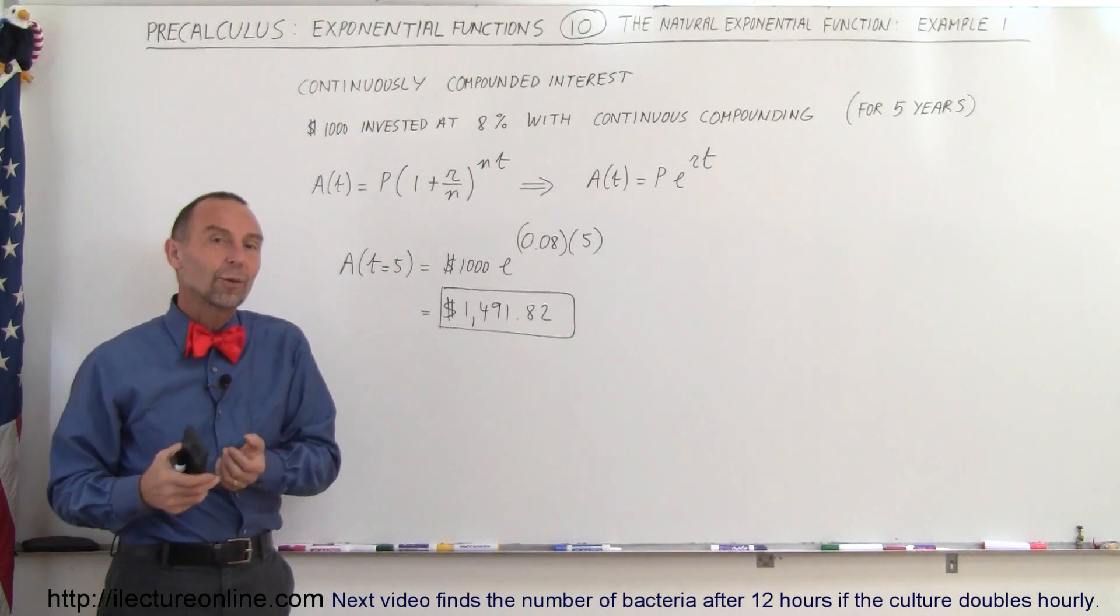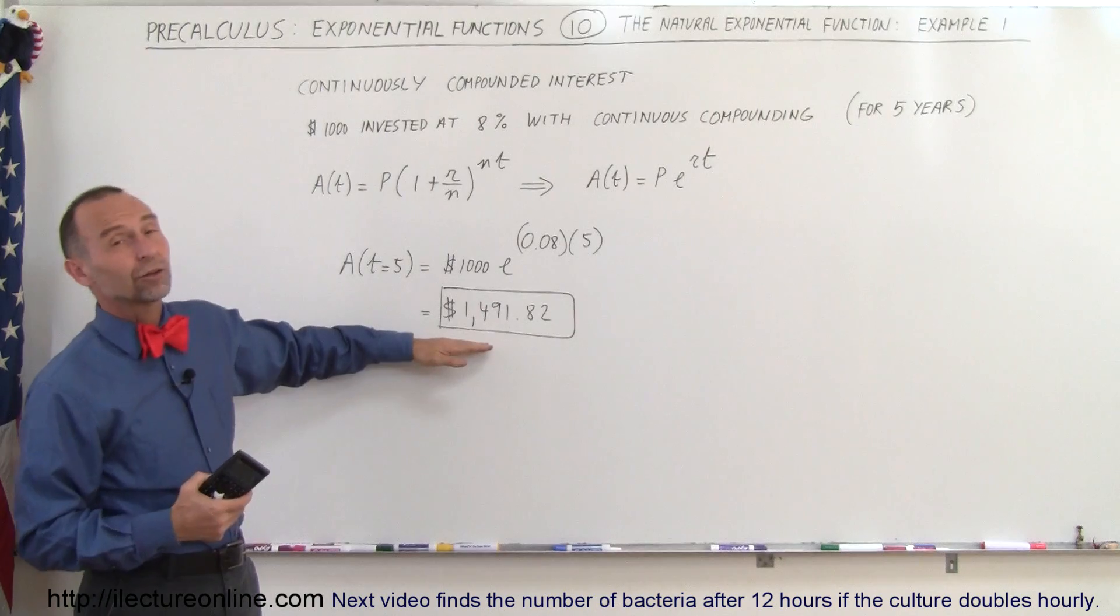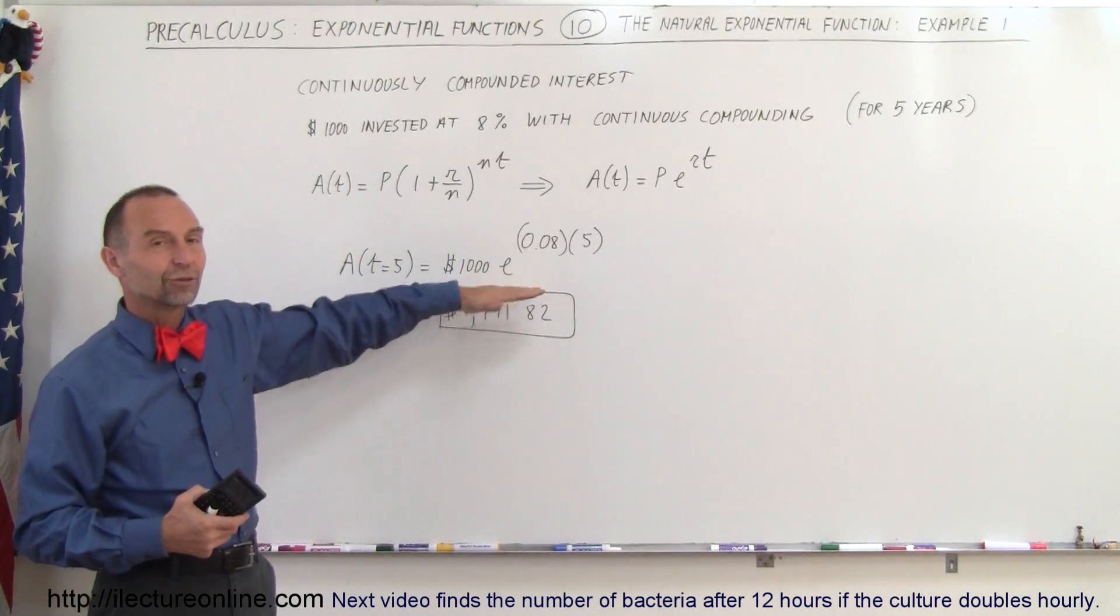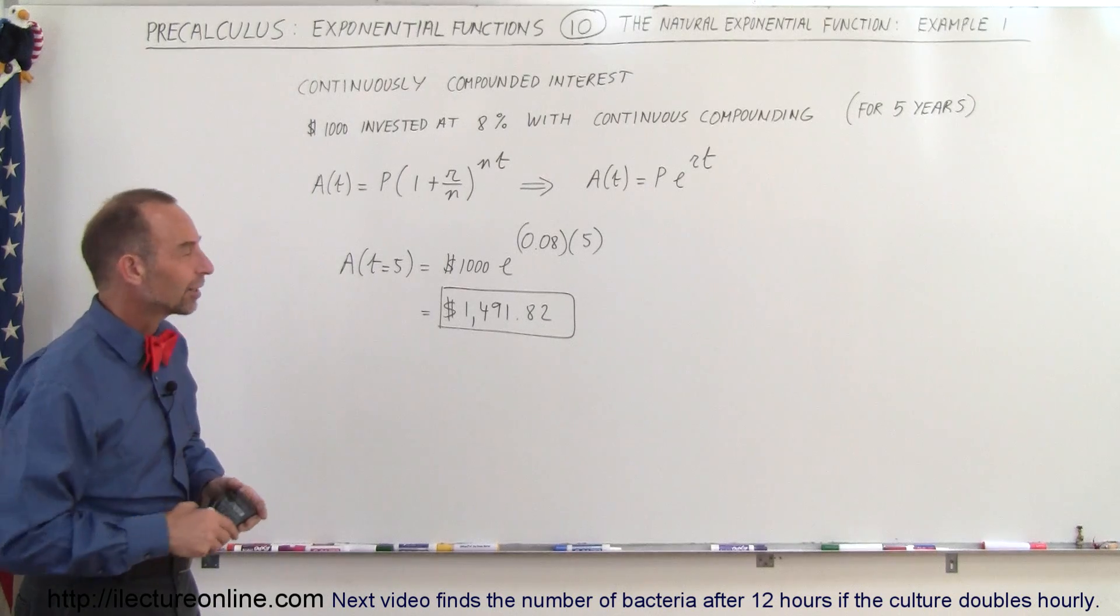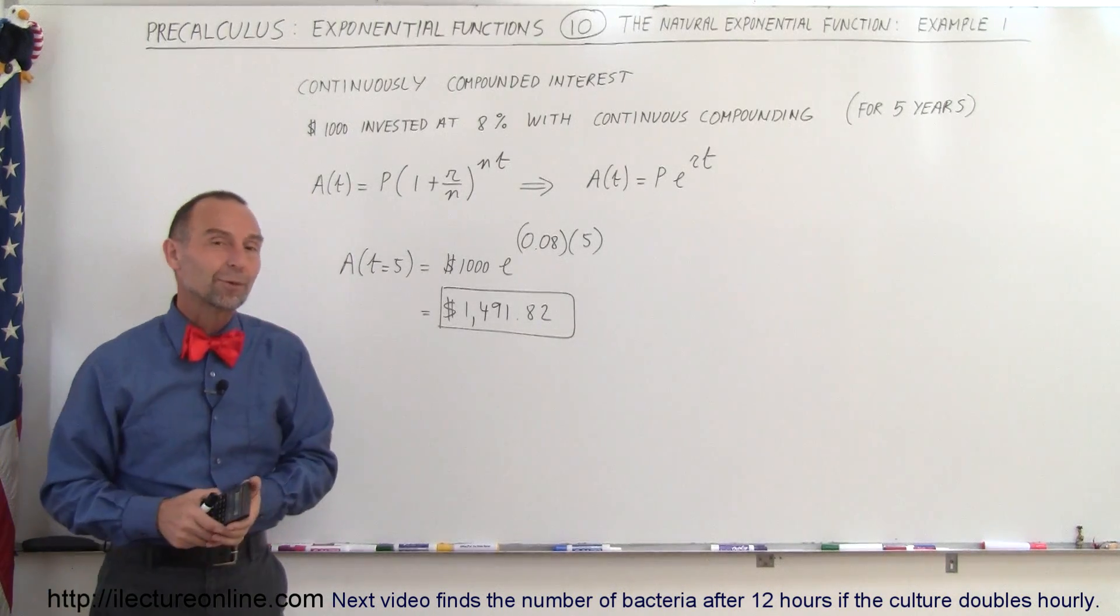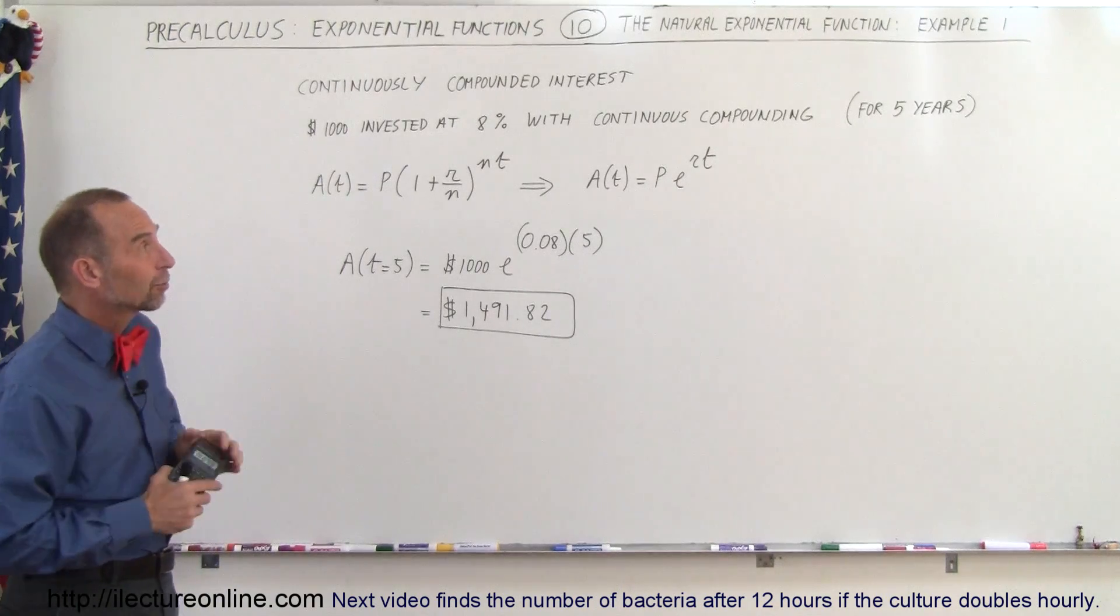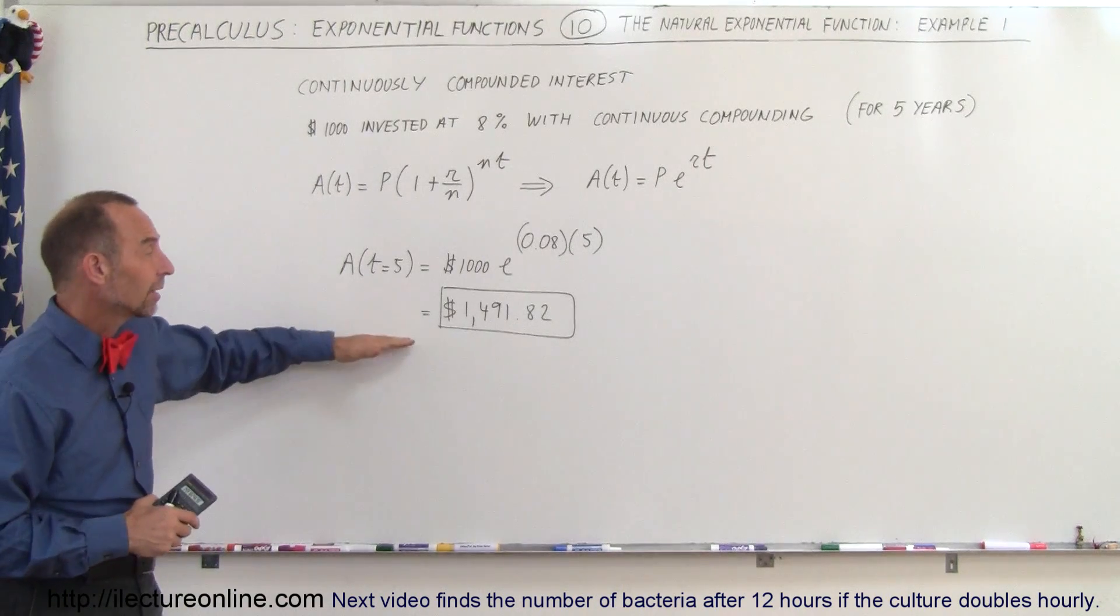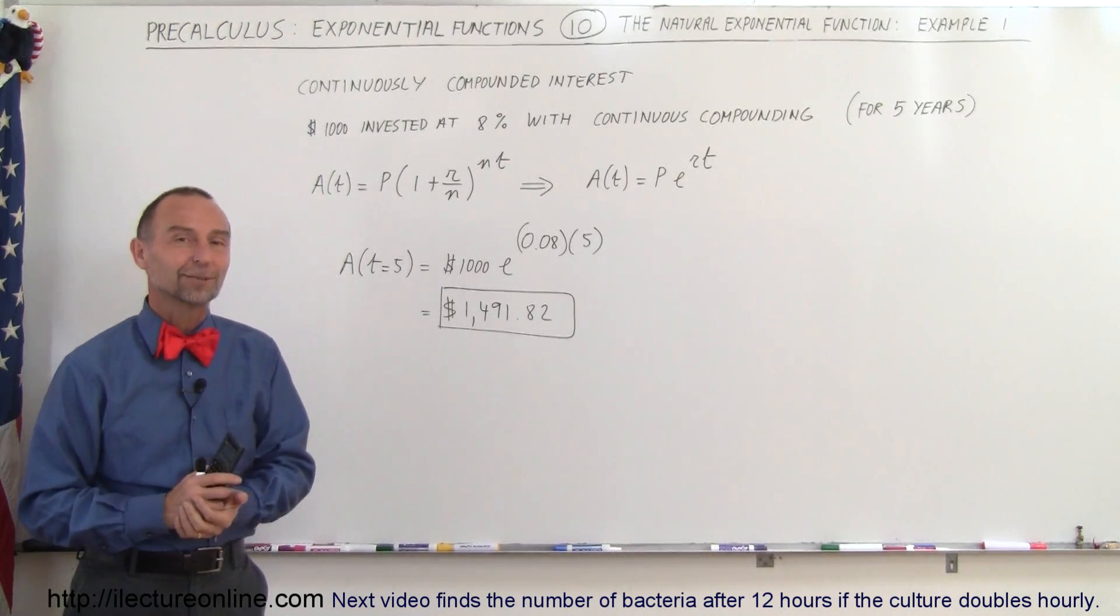And actually, if you want to do a quick calculation of how much interest you can earn in the bank, you'll be very close when you use continuous compounding versus daily compounding, and it's a lot easier to calculate using your calculator. So that's a nice example of how we use the natural exponential function to calculate how much money we will earn when we invest money in the bank. And that's how it's done.